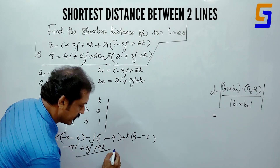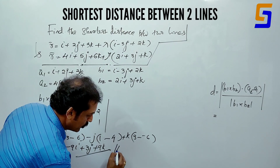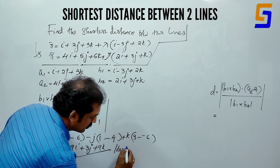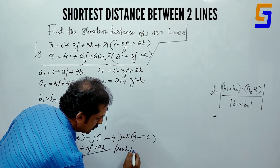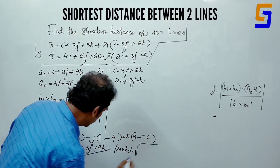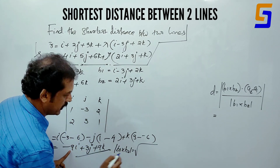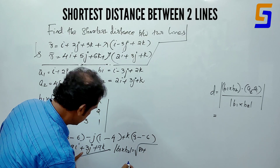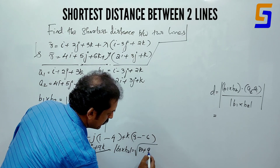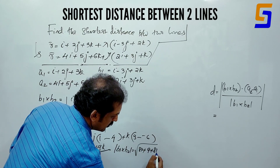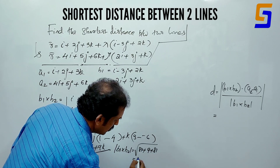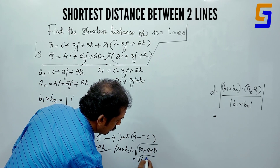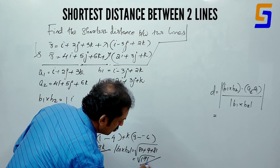The modulus of b1 cross b2 is equal to root of (9 squared plus 3 squared plus 9 squared), which is root of (81 plus 9 plus 81), equal to root of 171.